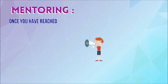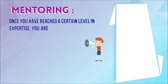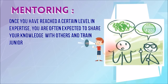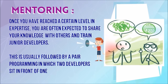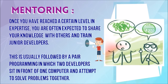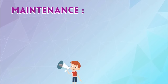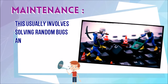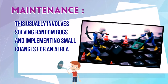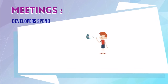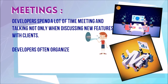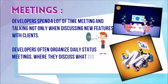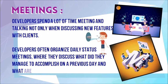Mentoring: once you have reached a certain level of expertise, you are often expected to share your knowledge with others and train junior developers. This is usually followed by pair programming, in which two developers sit in front of one computer and attempt to solve problems together. Maintenance usually involves solving random bugs and implementing small changes for an already working project. Developers also spend a lot of time in meetings, organizing daily status meetings where they discuss what they accomplished the previous day and what they plan to do that day.